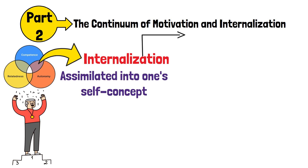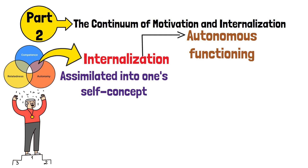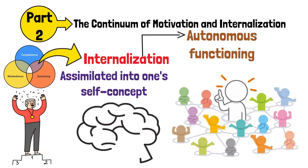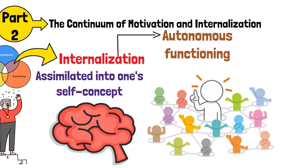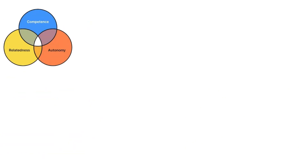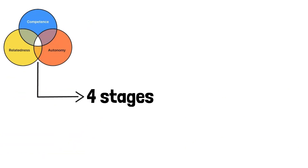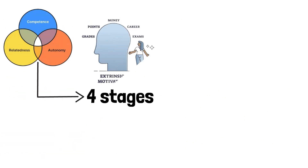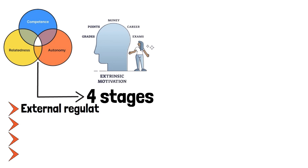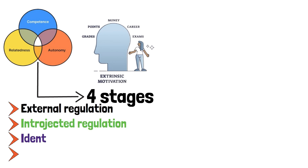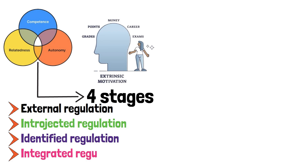Internalization supports autonomous functioning, critical for long-term engagement and psychological health. SDT identifies four stages along the extrinsic motivation spectrum: external regulation, introjected regulation, identified regulation, and integrated regulation.